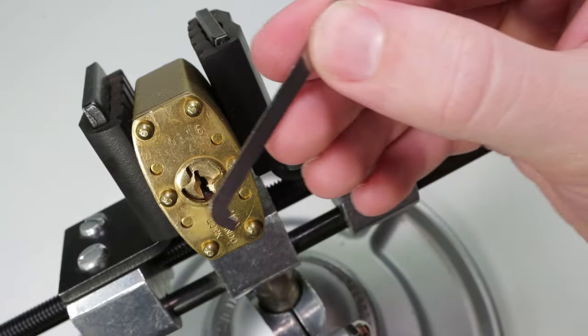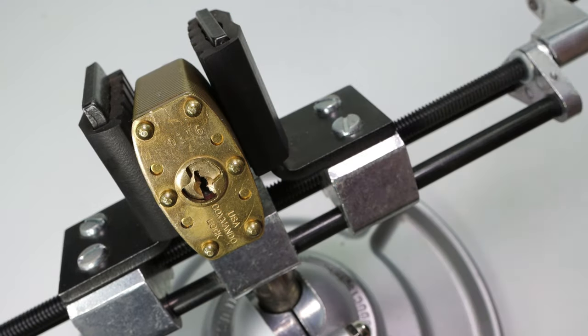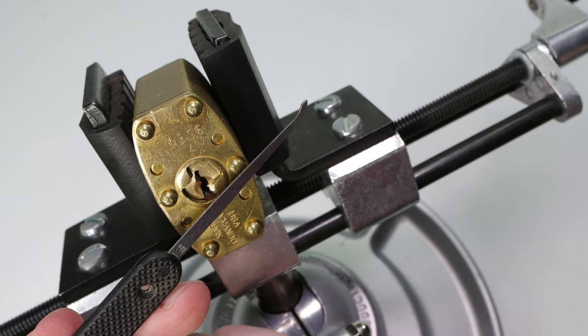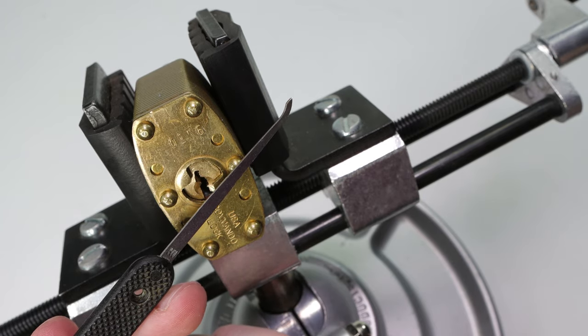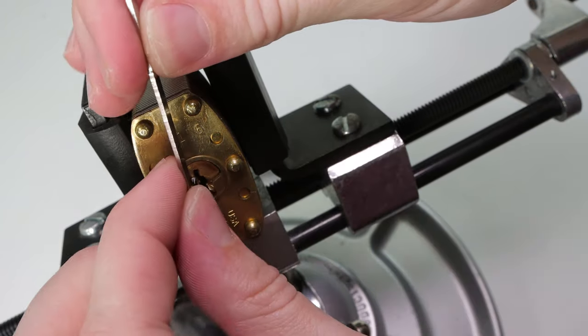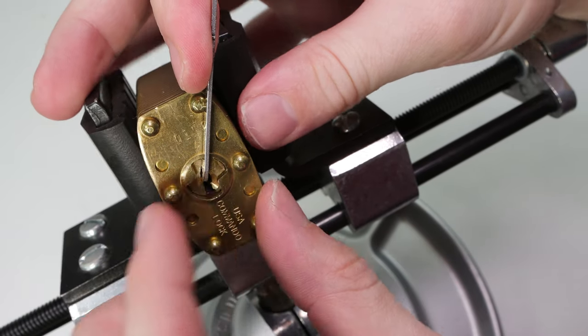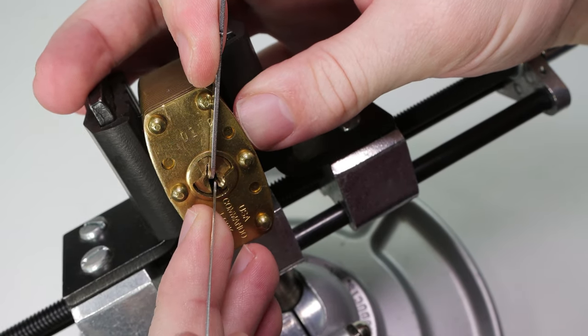All right, so what I'm going to do is use a top-of-the-keyway tensioner in 40 thousandths and a Peterson hook number one in 25 thousandths. So without further ado, let's see what it takes to open up this really cool Commando Marine.